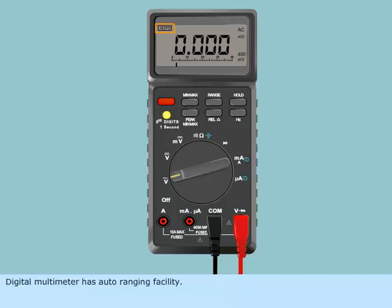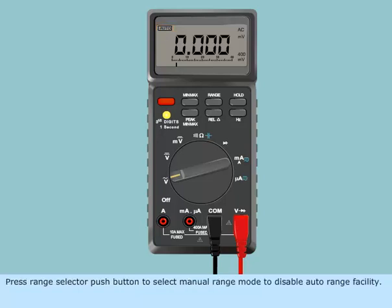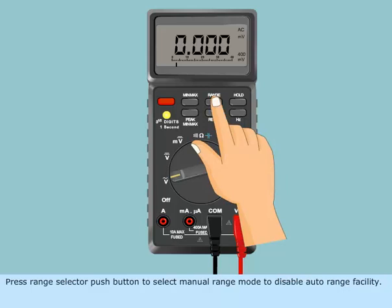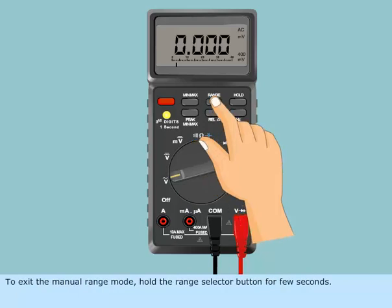Digital multimeter has auto ranging facility. Press range selector push button to select manual range mode to disable auto range facility. By again pressing the range selector button, the ranges can be selected. To exit the manual range mode, hold the range selector button for few seconds.